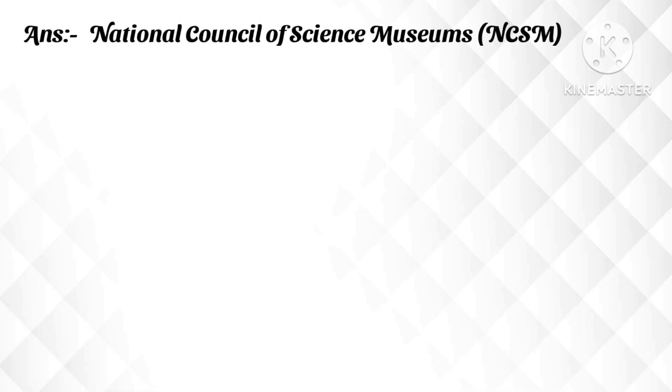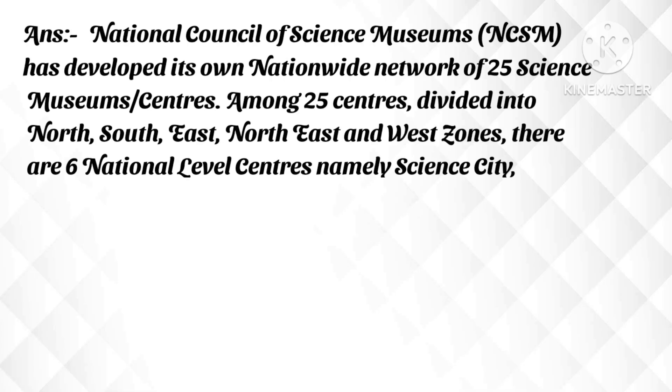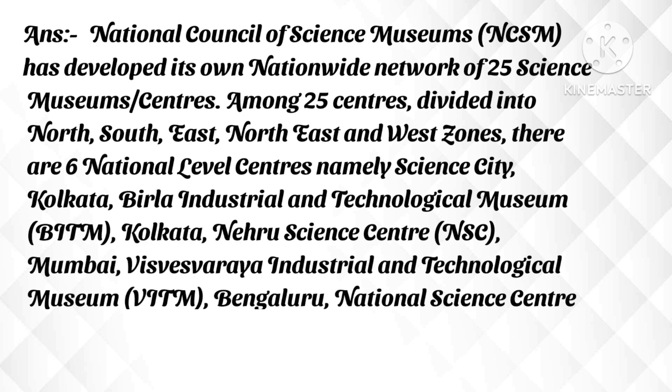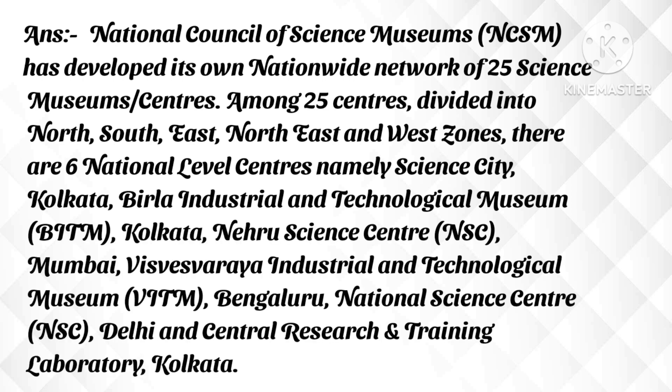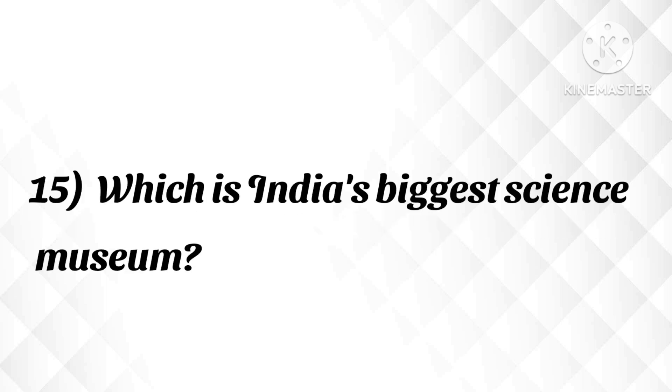How many science museums are there in India? Answer: The National Council of Science Museums has developed a nationwide network of 25 science museums, divided into north, south, east, northeast, and west zones. There are six national-level centers: Science City Kolkata, Birla Industrial and Technological Museum Kolkata, Nehru Science Center Mumbai, Visvesvaraya Industrial and Technological Museum Bangalore, National Science Center Delhi, and Central Research and Training Laboratory Kolkata.